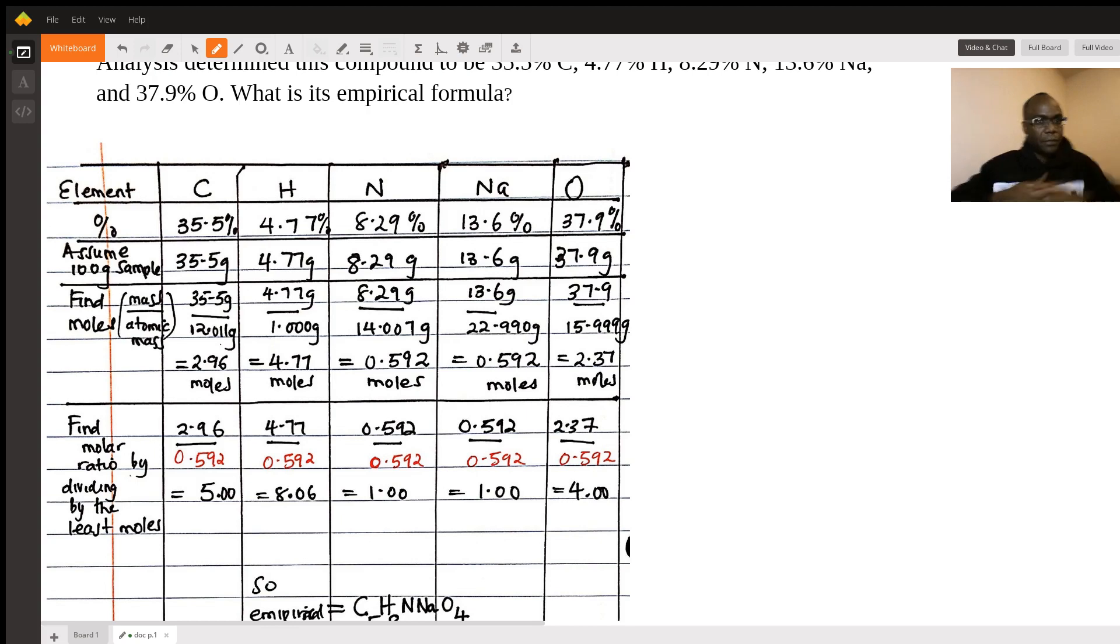So you look at the periodic table, you'll find that the atomic mass for carbon is 12. So you divide 35.5 grams by 12, divide 4.7 grams by 1, which is the atomic mass for hydrogen, divide the mass of nitrogen, 8.29 by 14. All these atomic masses are from your periodic table.